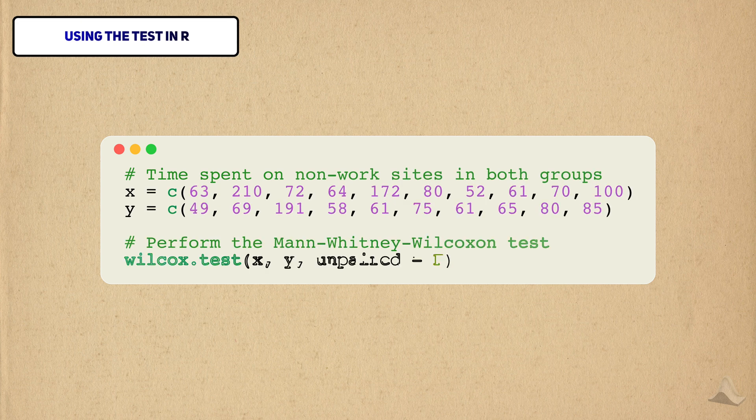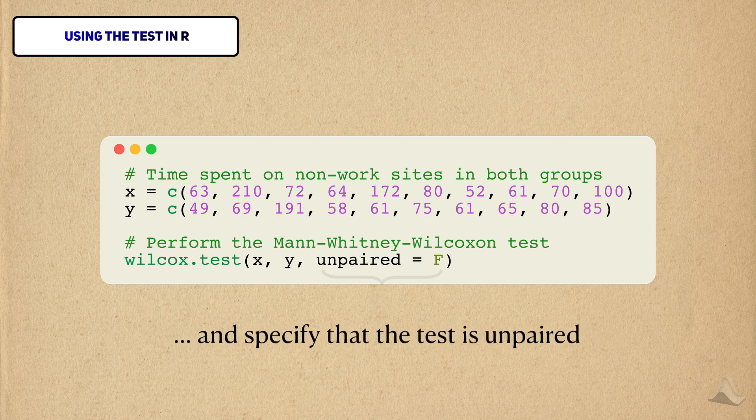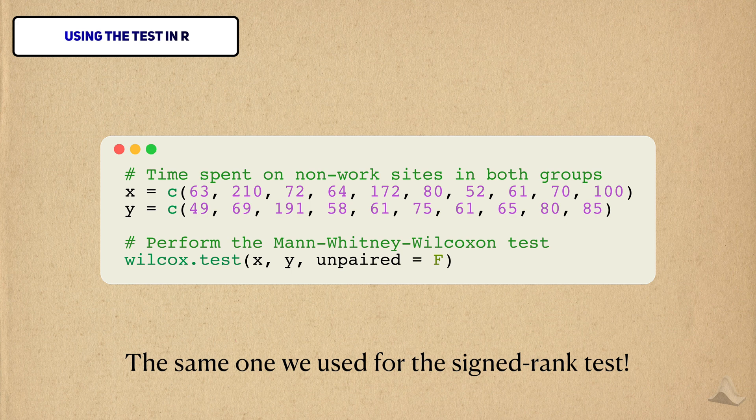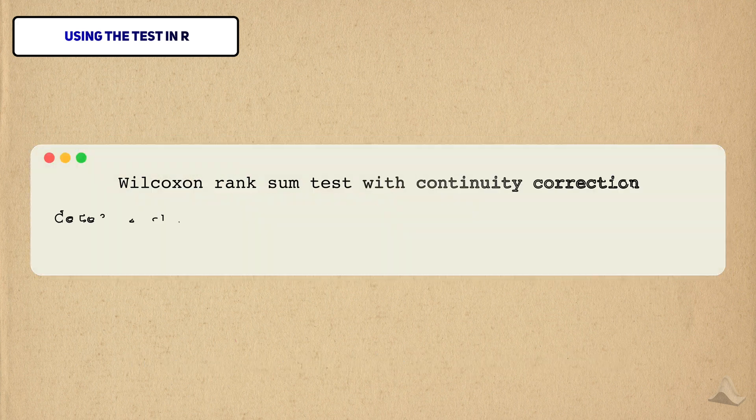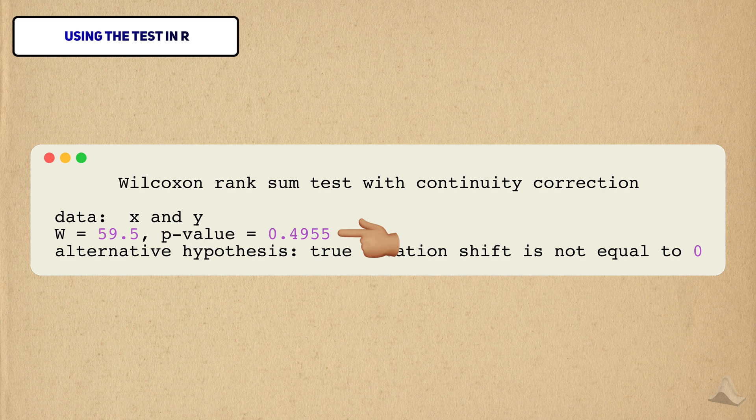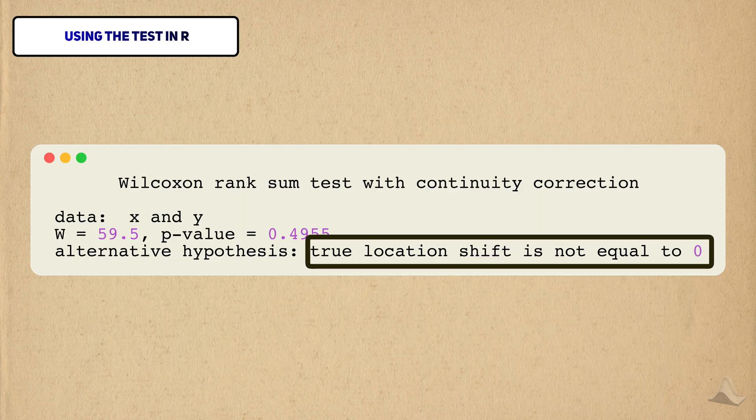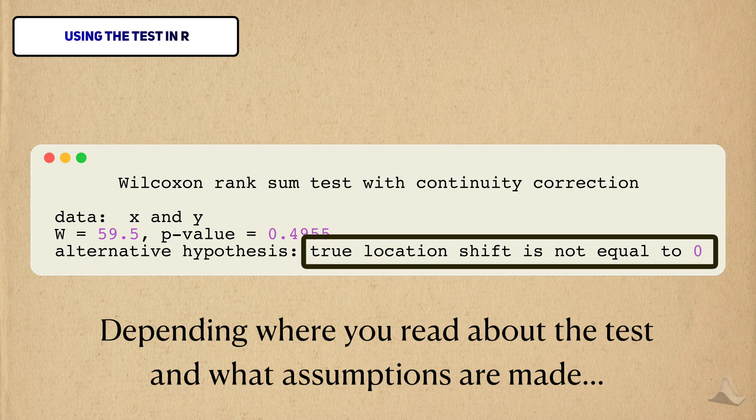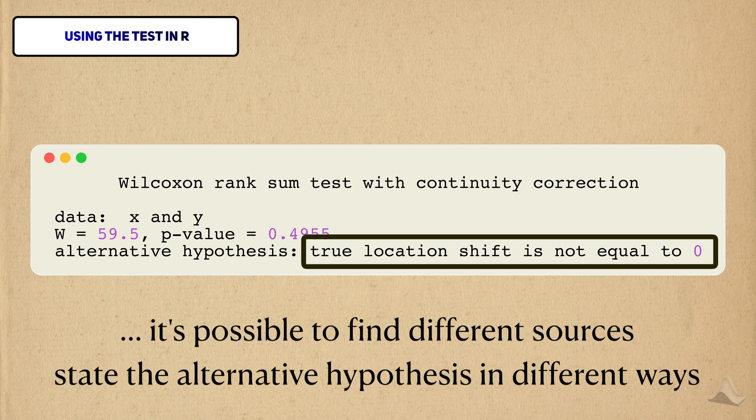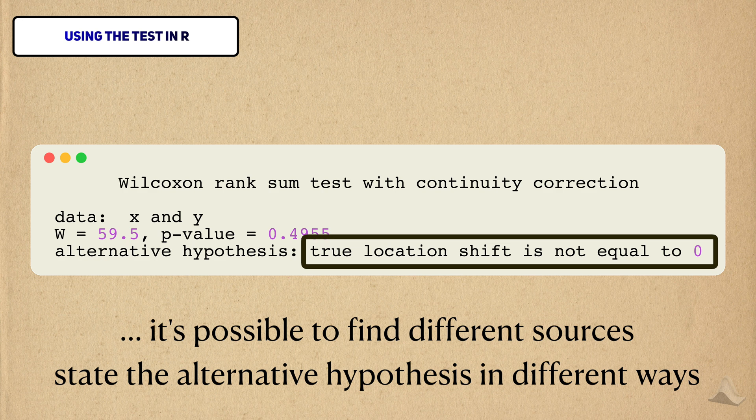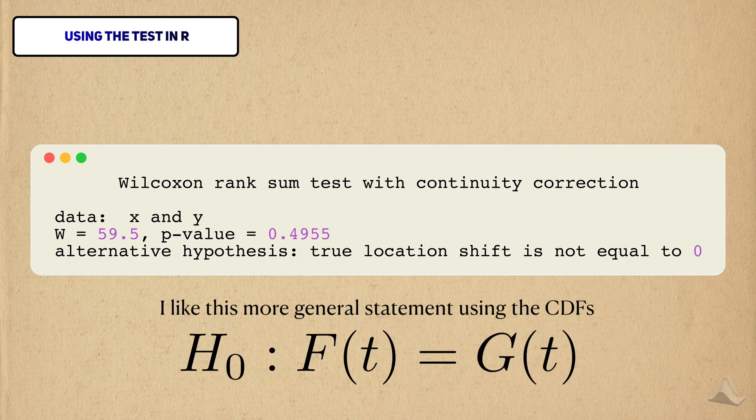The function that implements the MW2 test is the wilcox.test function. To do this, we just need to pass our two observed samples and specify that the two samples are unpaired by setting the unpaired argument to false. We use this function, part 1, to implement the signed rank test. If I pass in my data, I'll actually see that I failed to reject the null hypothesis. I would take this as statistical evidence that my software isn't appreciably reducing the amount of time on non-work sites. You can see that R states the alternative hypothesis in terms of the location shift. Depending on where you read about the test, and what assumptions that source uses, it's possible to see these different statements about the alternative hypothesis. But here I've phrased it in more general terms using the CDF.